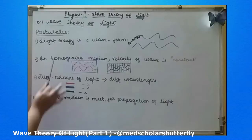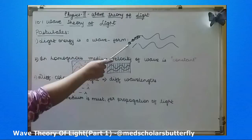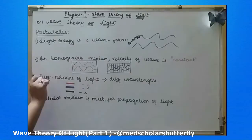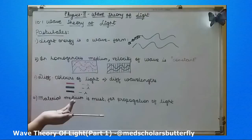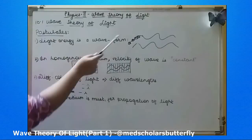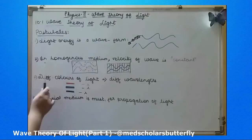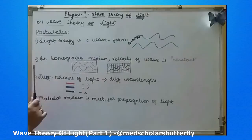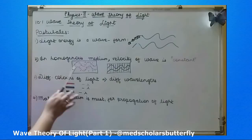The postulates of Huygens' wave theory of light state that light energy is a wave form. When the light is emitted from a bulb or a light source, there are particles which vibrate in their mean position. Just like if we clap and that person claps another one, the change goes on — in the same way the particles vibrate in the mean position and they transfer energy from one particle to another, creating a light wave.